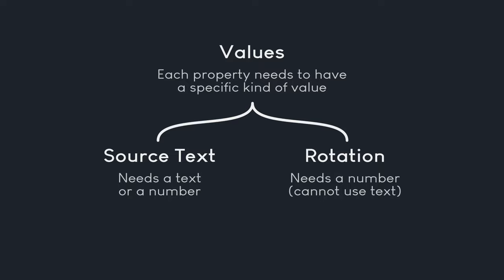If you want to create numbers, all you have to do is write a number. However, if you want to write some text, you would have to put quotation marks around that text. With that we have the most basic kinds of data types.